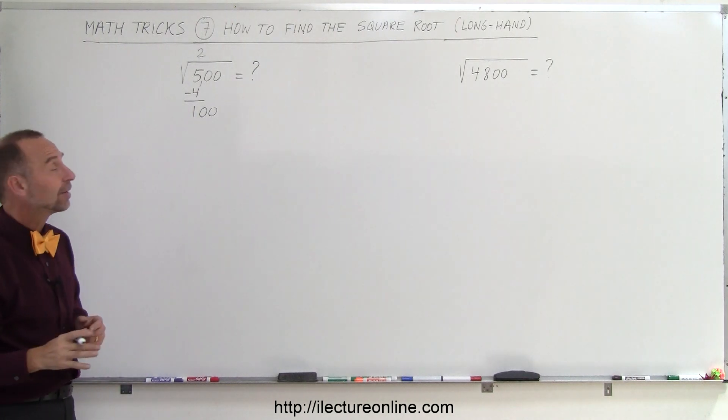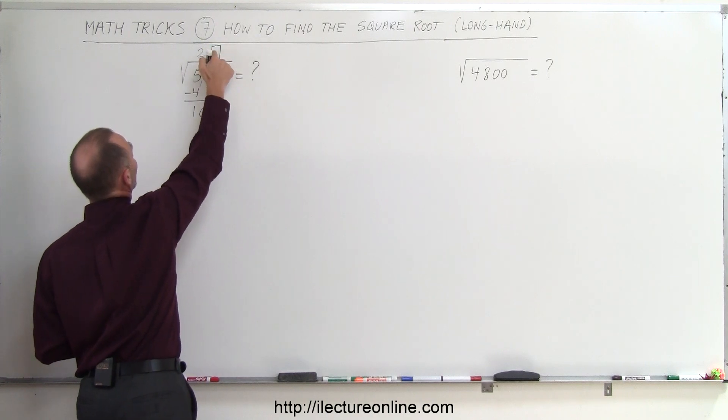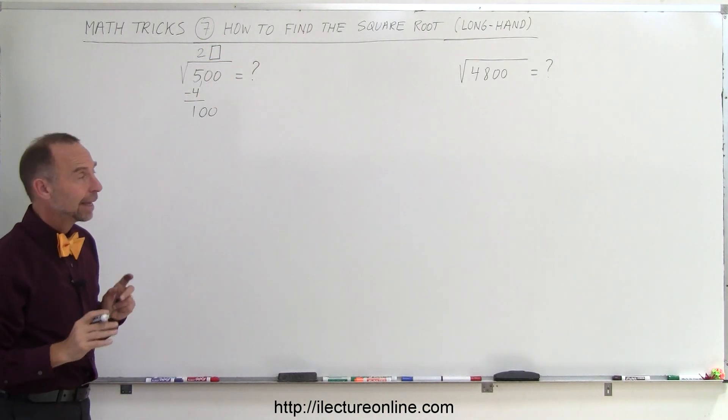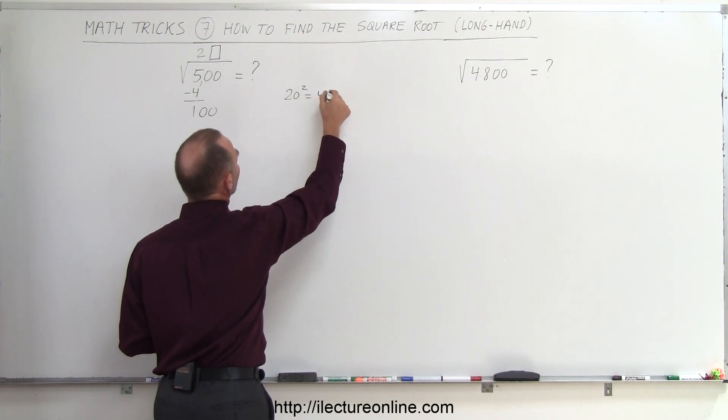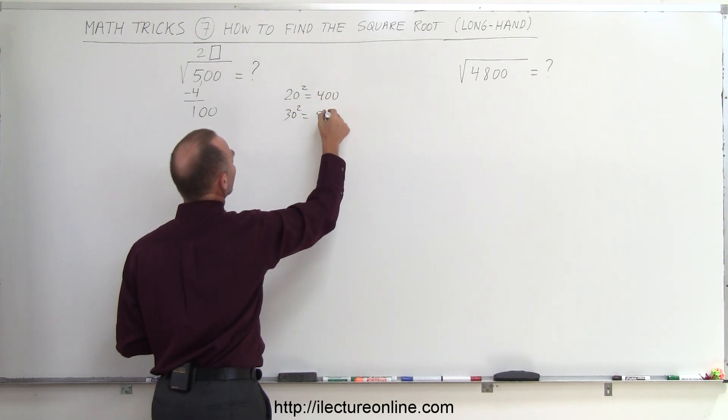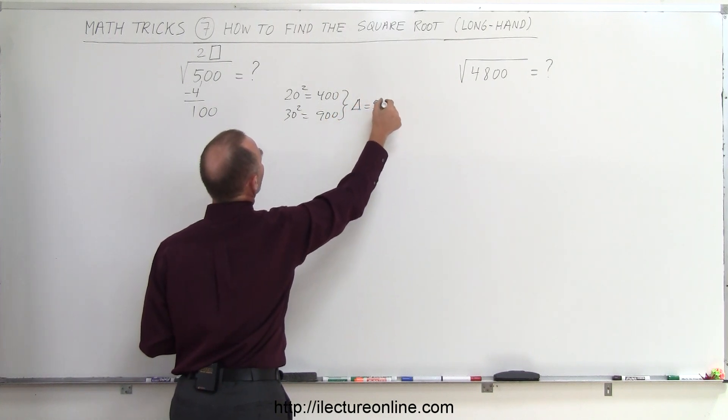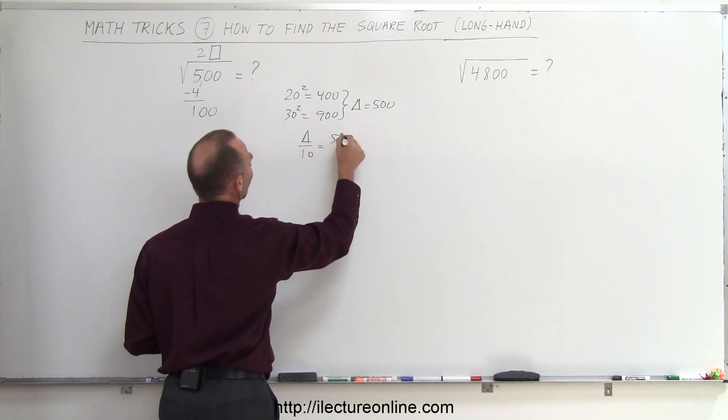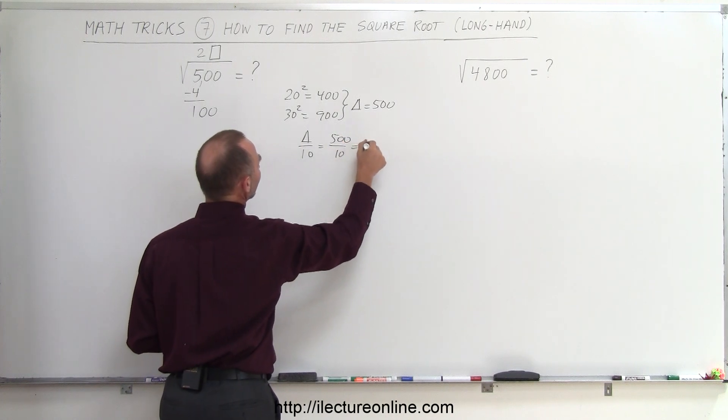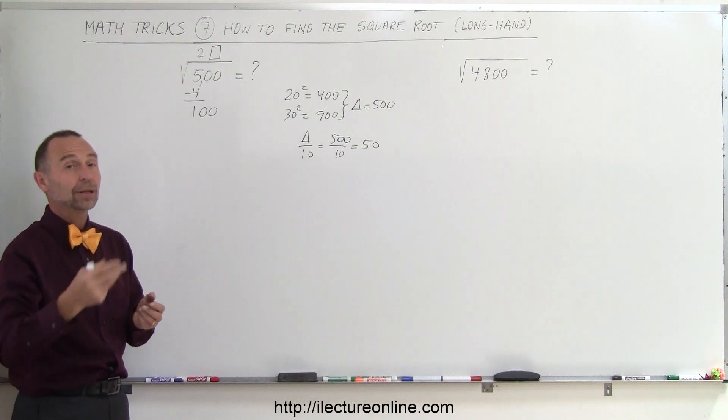What you do then is you take the first number and you come up with a number times by itself that is equal to 5 or less than 5. So in this case I take the number 2 because 2 times 2 is 4, and 3 times 3 is 9 which is too big. 2 times 2 is 4, I put a 4 there, subtract that, I get a 1. Not divided by 50, divided by 10, so 500 divided by 10 which is equal to 50.